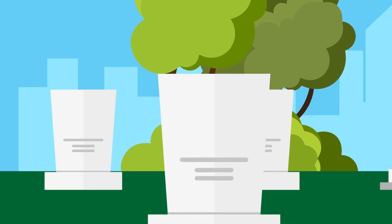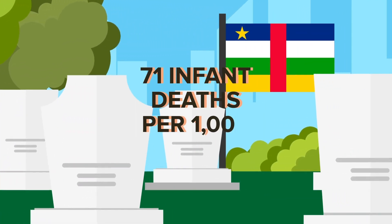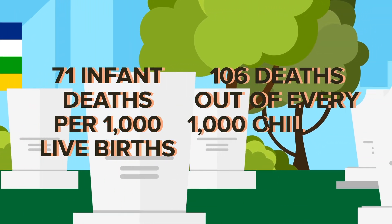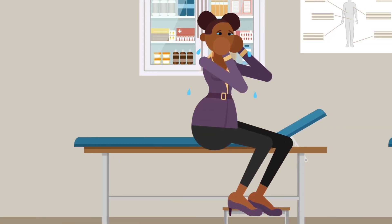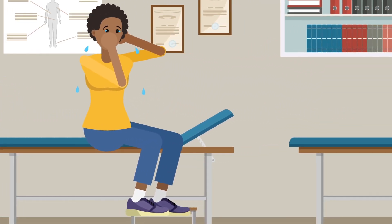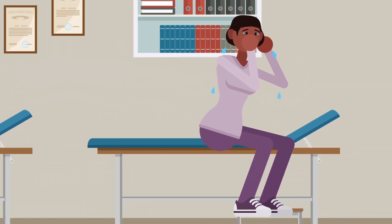But even these numbers are nothing compared to the Central African Republic, which has 71 infant deaths per 1000 live births, and 106 deaths out of every 1000 children under 5. When we factor in infant and child mortality, it's easy to see why the Central African Republic has the world's lowest life expectancy.